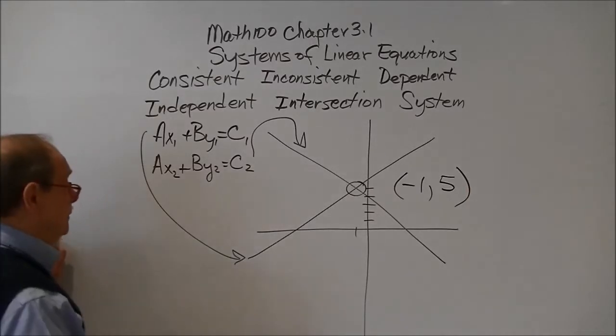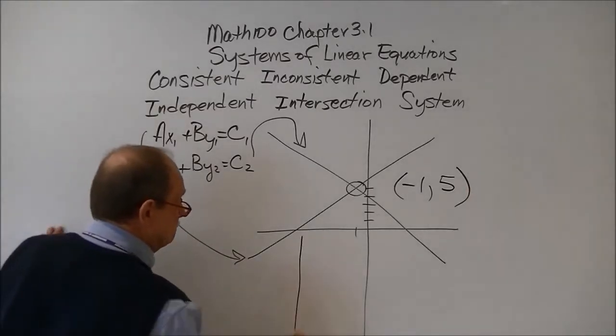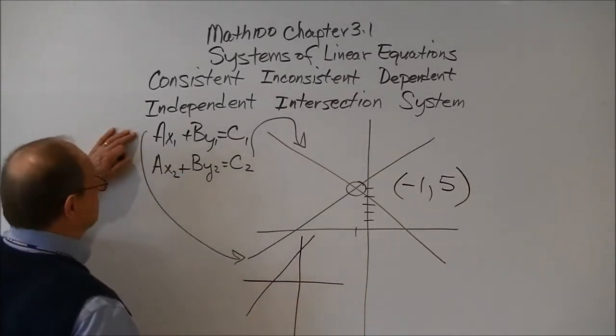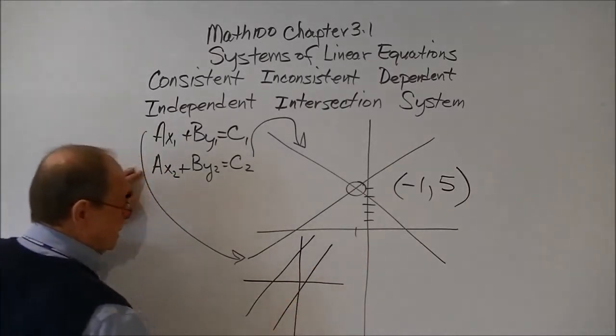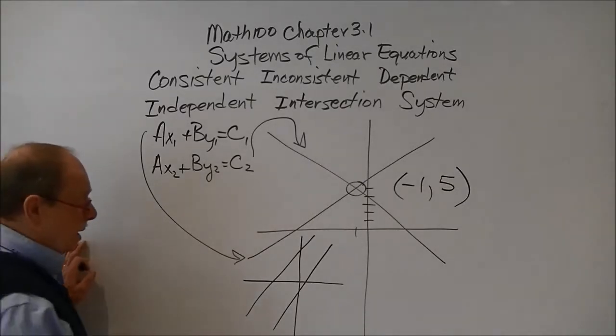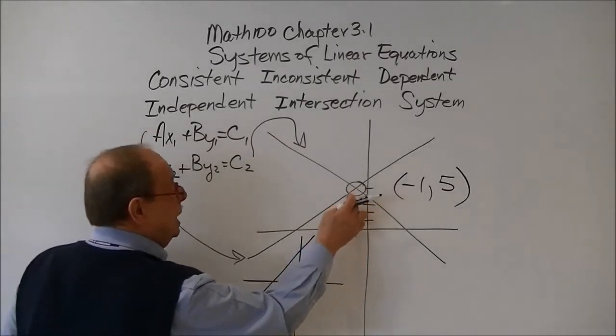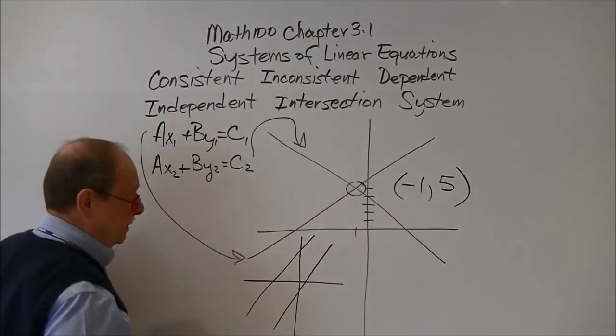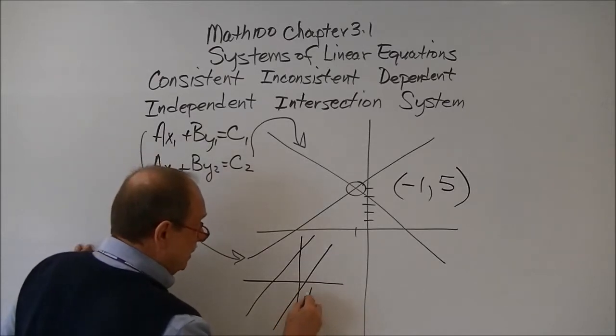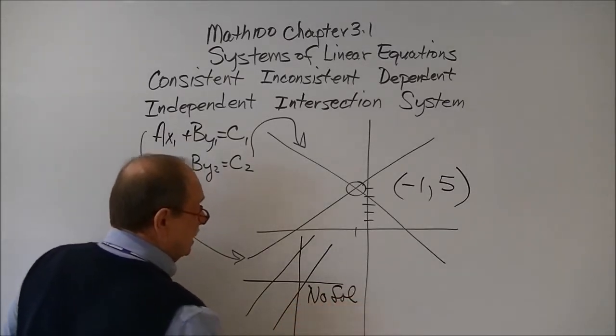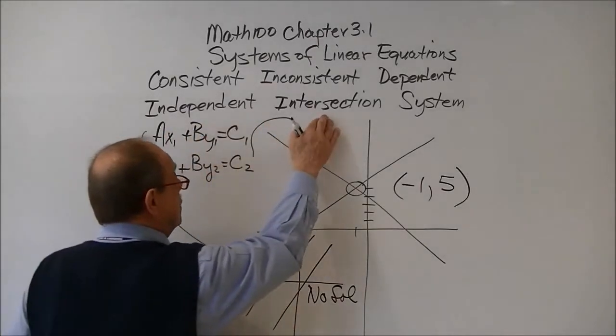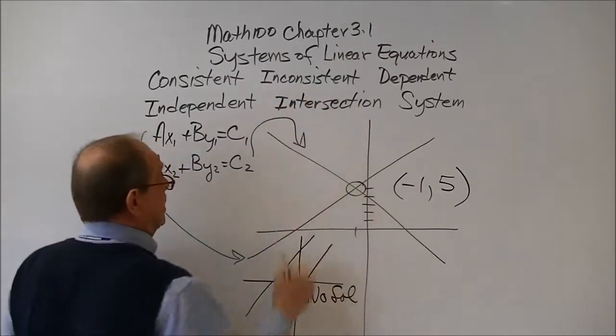If we had another graph and I graph this first equation and the second equation, we'd say these lines are parallel. Will they ever form a common point of intersection? The answer is no. If you're doing a graph and there are no points of intersection, we say there is no solution. These graphs are independent, there is no intersection, and we say they are inconsistent.